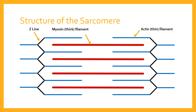We refer to the myosin filaments as the thick filaments and the actin filaments as the thin filaments. The myosin is also attached to the Z-lines by another protein filament known as titin.